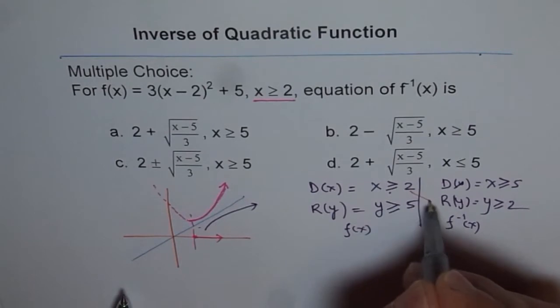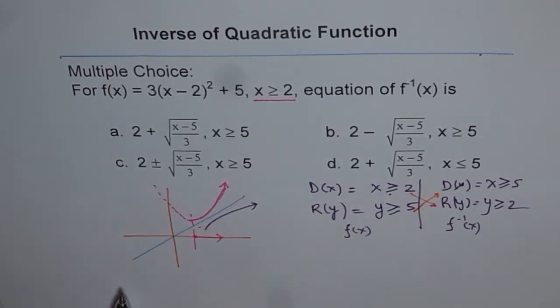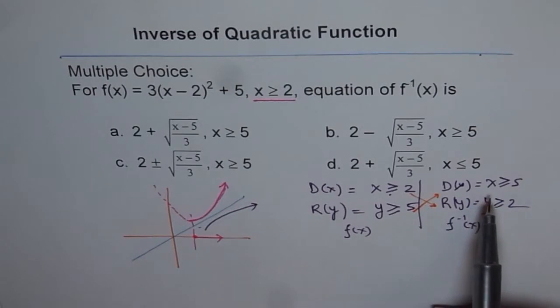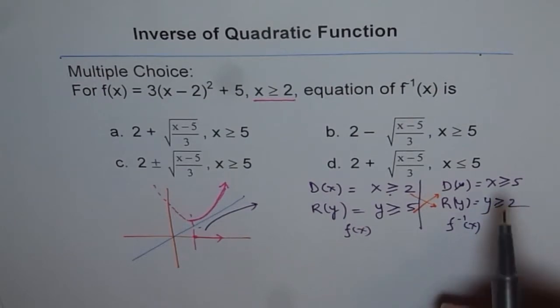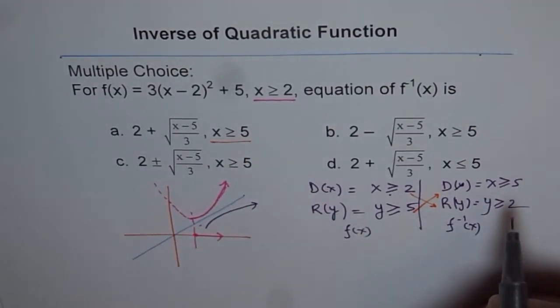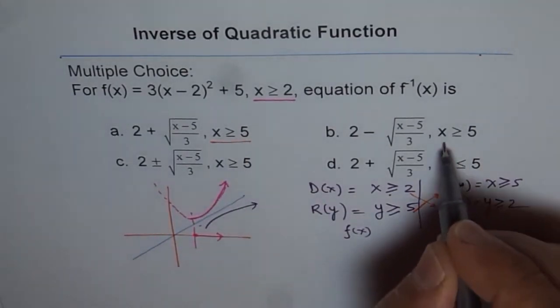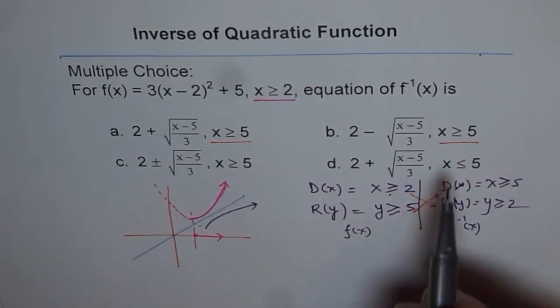So what I am trying to say is, for inverse of a function, this domain and range is going to flip. Now, that gives you a fairly good idea about what should be the right choice. So we are looking for something which is x greater than or equal to 5. In which case do we get x greater than or equal to 5? We have two cases here.